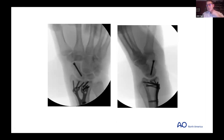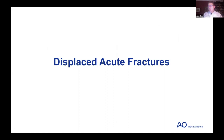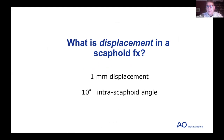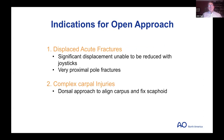Percutaneous reduction for displaced fractures is possible, but be cognizant of your reduction. For really significantly displaced acute fractures: what constitutes displacement? One millimeter displacement in the scaphoid is significant, and it's often hard to tell — if in doubt, get a CT scan. Ten degrees of angulation with the humpback is also a marker. If it's off, especially in a young patient, you want to achieve reduction and fix it stably. Indications for open fixation include displaced acute fractures with significant displacement that can't be reduced with joysticks, and very proximal pole fractures even without displacement.